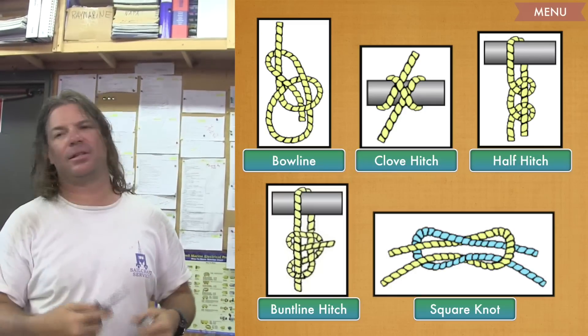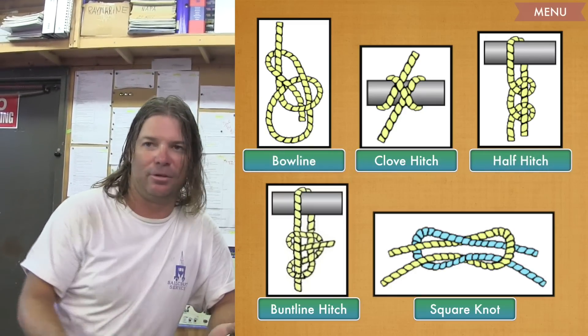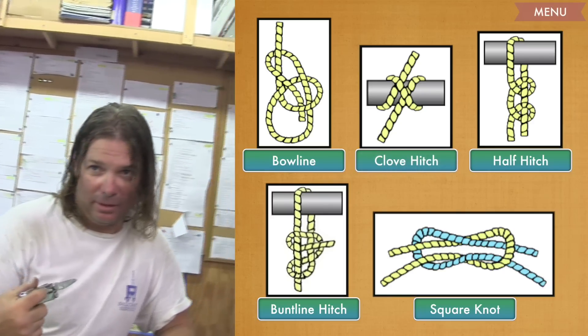And a power boater really just needs three. A bowline, a half hitch, just tying a boat to a piling or something, and a clove hitch. And that's my opinion.